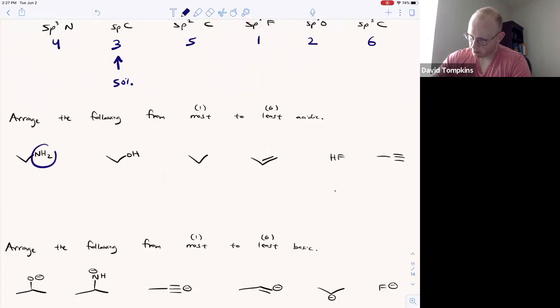So comparing an amine, which has a pKa generally of 35, an alcohol, which has a pKa between 15 and 20, the alkane, which has a pKa in the 50s. So this is sp3 carbon, sp3 oxygen, sp3 nitrogen,